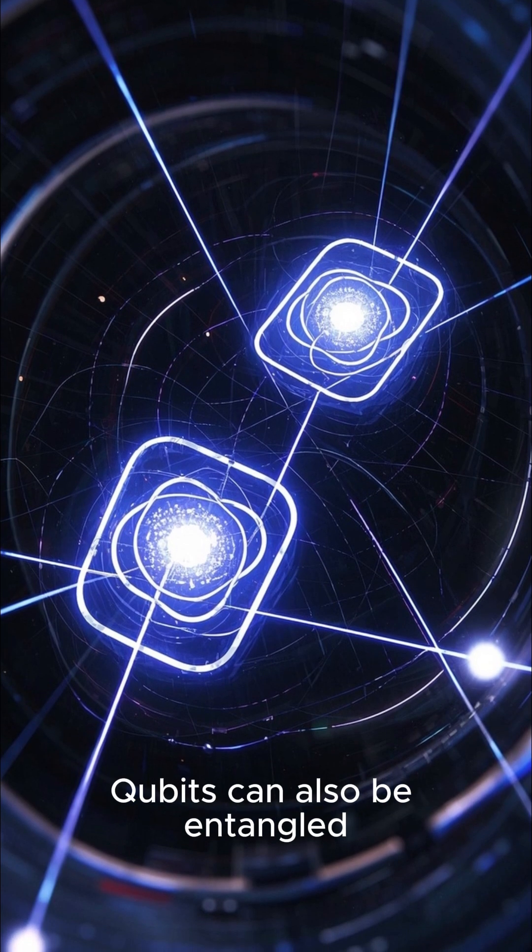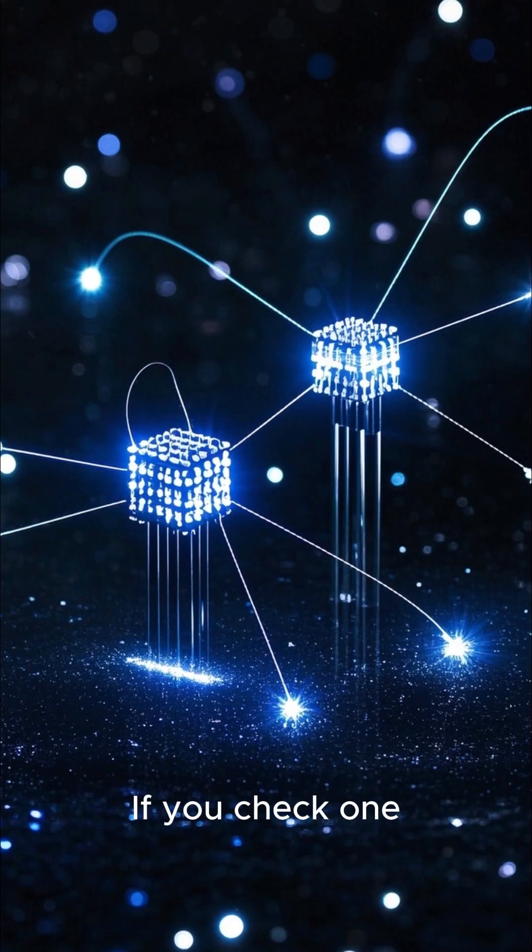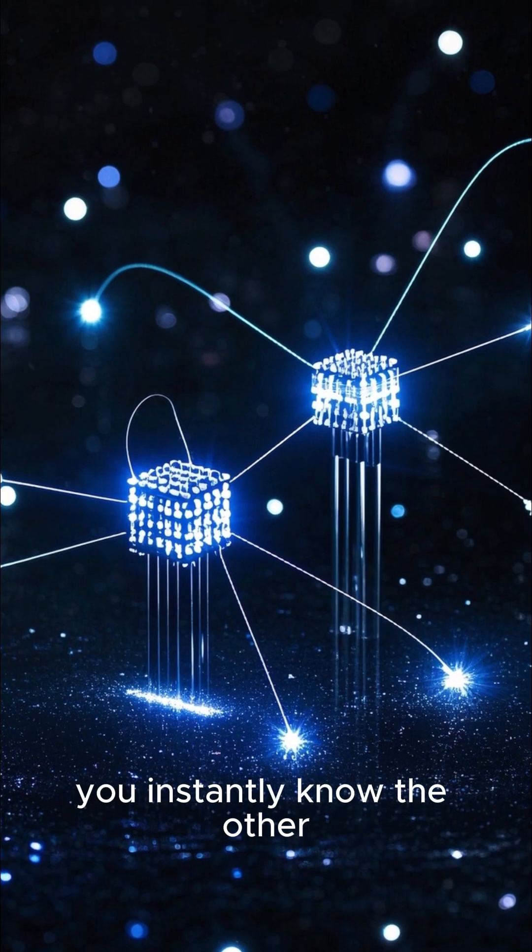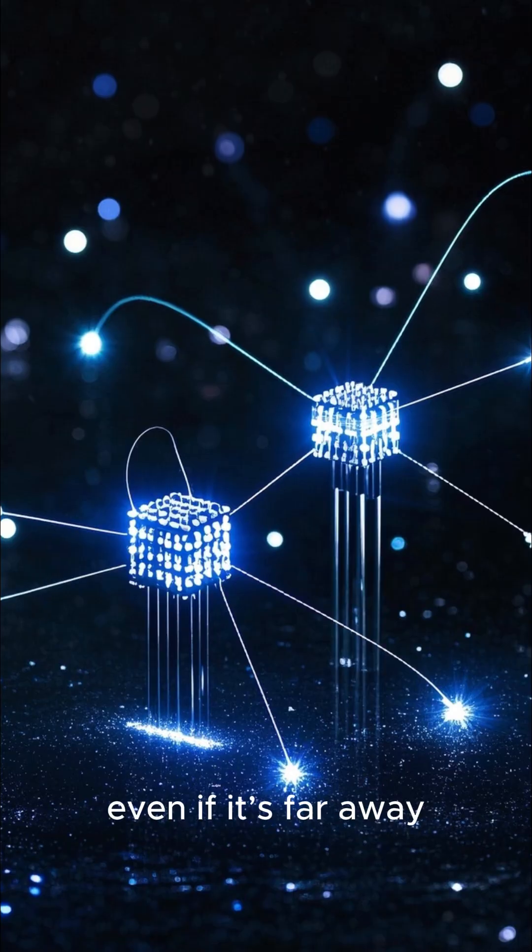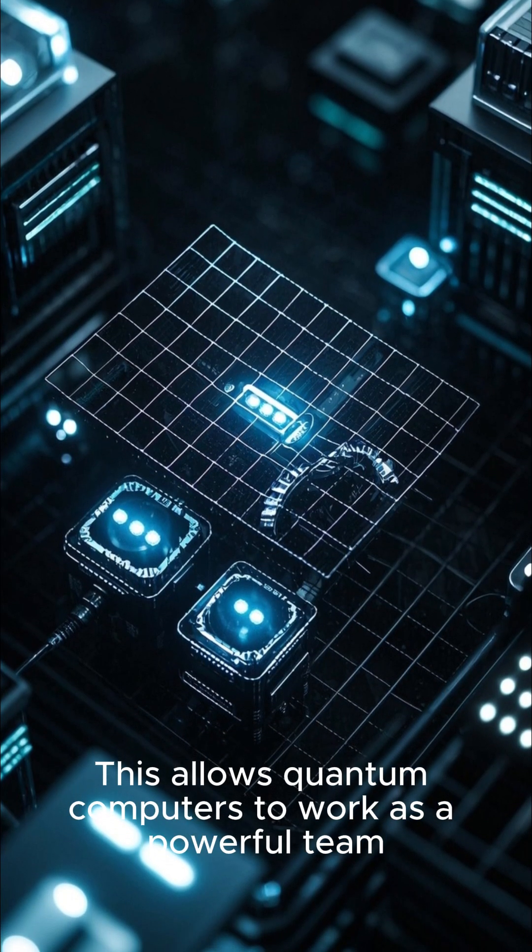Qubits can also be entangled, meaning two qubits become linked. If you check one, you instantly know the other. Even if it's far away, this allows quantum computers to work as a powerful team.